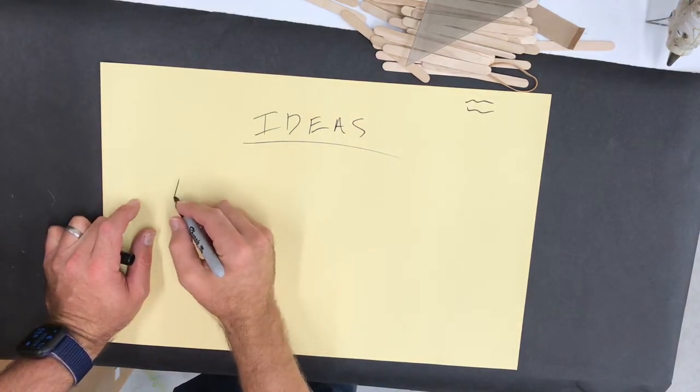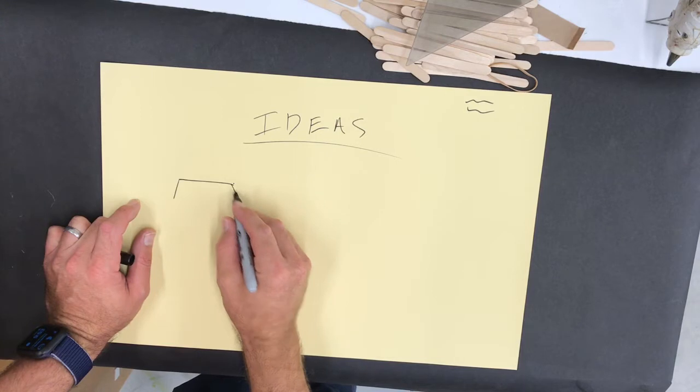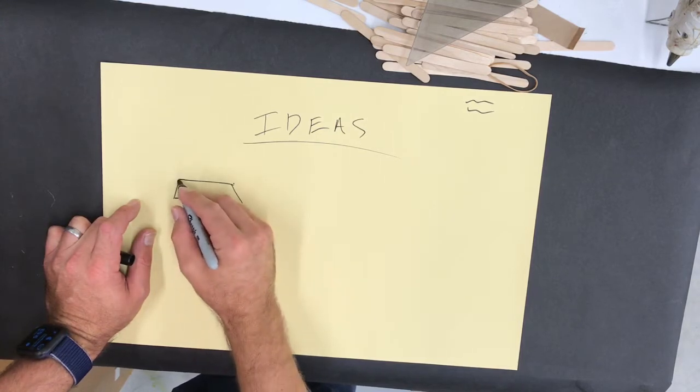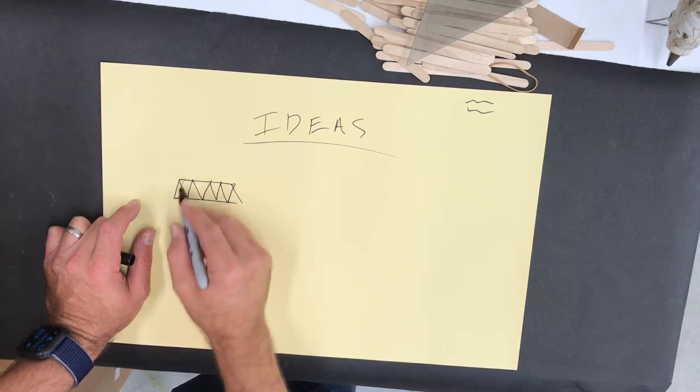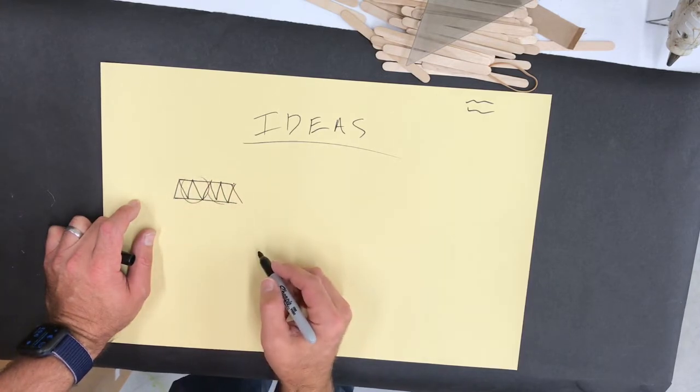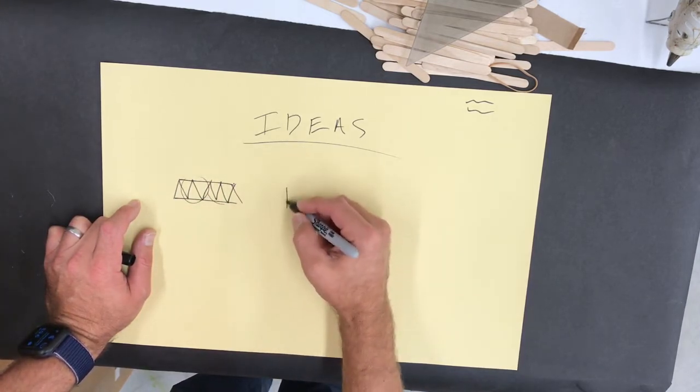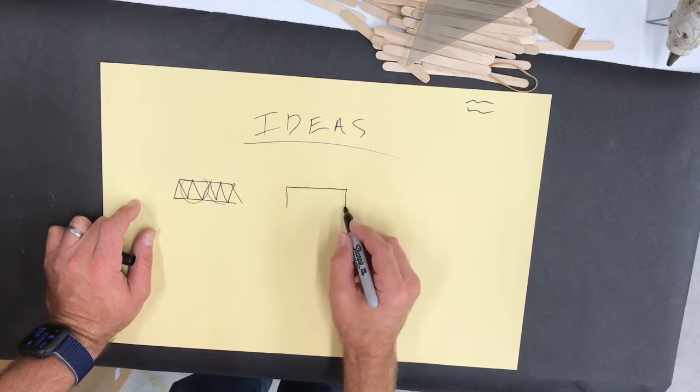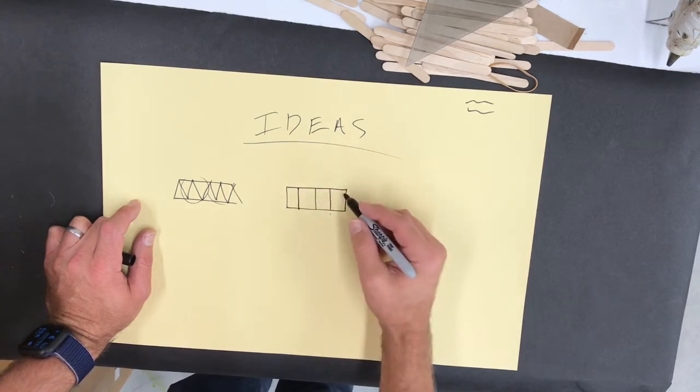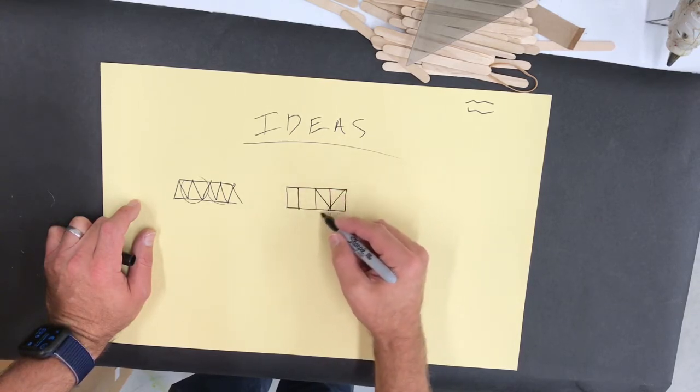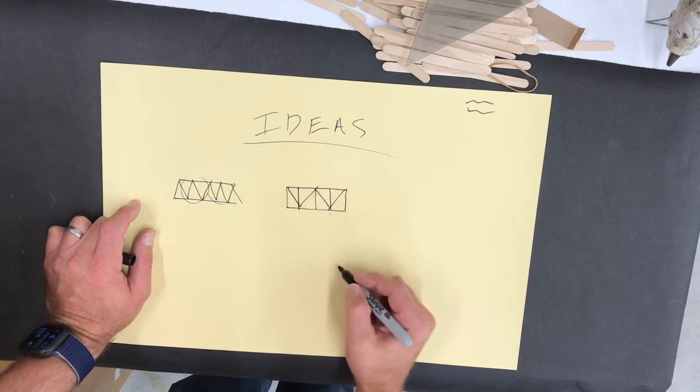So one of my bridge designs that I'm thinking about building is going to look like the Warren truss and it's got some W's in there. You can see there's a W there and a W there. Another idea that you might have is to do something that is a rectangle divided into four equal sections, something like this might be an idea.